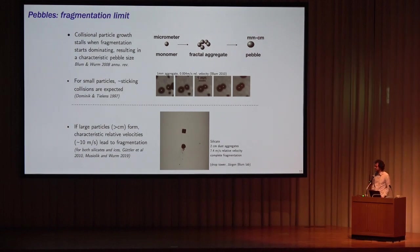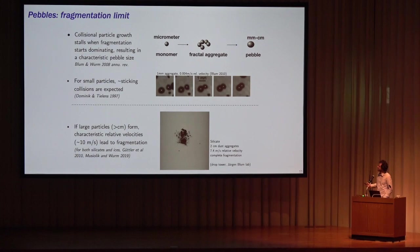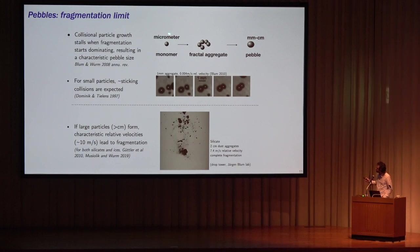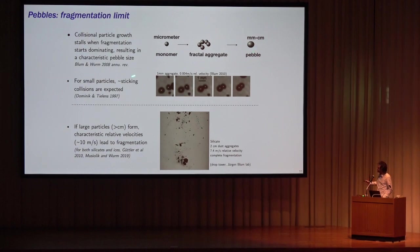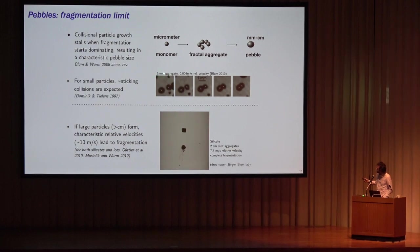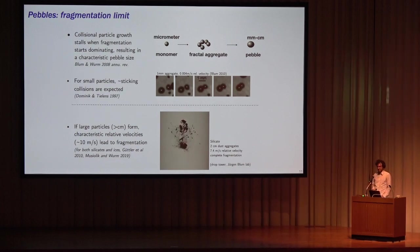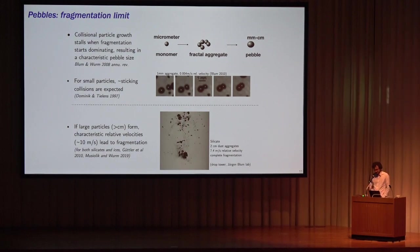We have a pretty good idea why there are so many small particles in protoplanetary disks: collisional growth stalls at millimeter sizes. We start with very small monomer-sized grains that form fractal aggregates, ultimately forming pebbles — an efficient process driven by sticking. When millimeter-sized aggregates have relatively low relative velocities, they just stick together, as illustrated in a lab experiment. But if you take large particles, say centimeters in size, and collide them at characteristic relative velocities of about 10 meters per second, the typical outcome is fragmentation.